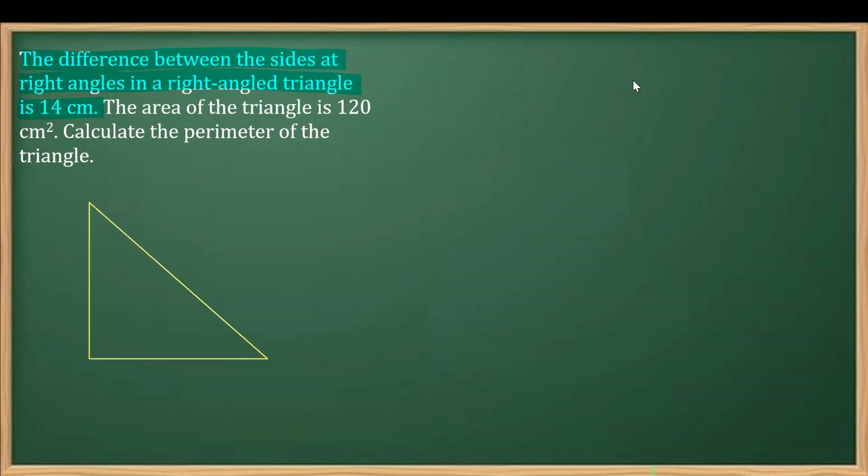Now check here, the difference is not given between the hypotenuse and any other side. It is given between the two sides containing the right angle, so that means the difference is 14. That means if I take this as x, the other will be x plus 14. You may write x minus 14 also because the difference is in both ways the same.